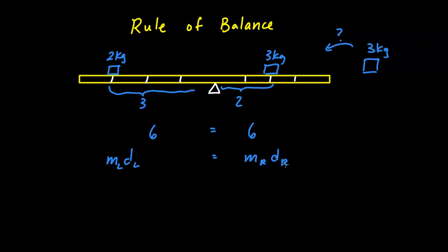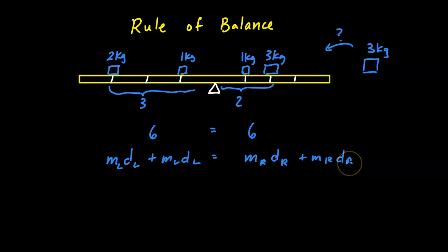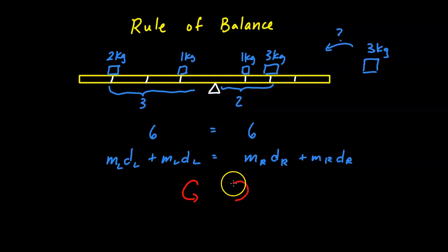If there are multiple objects, you simply add each mass-times-distance contribution to the appropriate side. As long as the totals on the left and right are equal, the seesaw will balance. Another way to think about this is the concept of torque — if the torque in one direction balances the torque in the other direction, the system will balance.